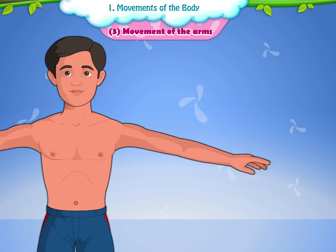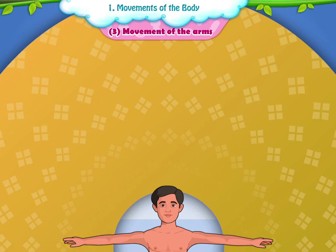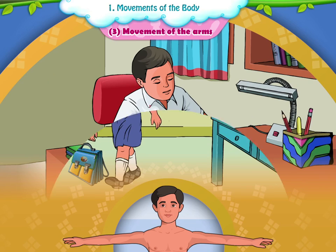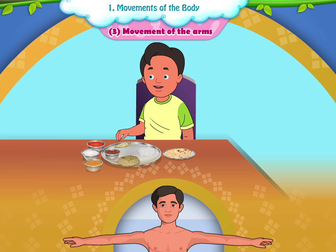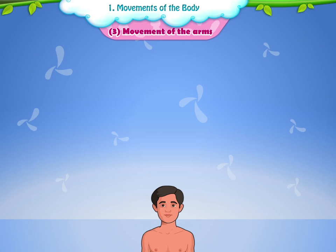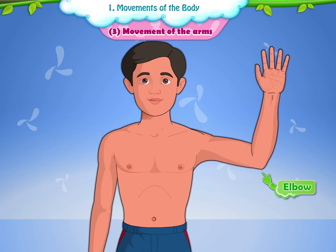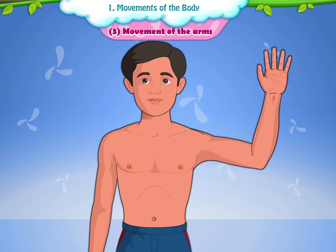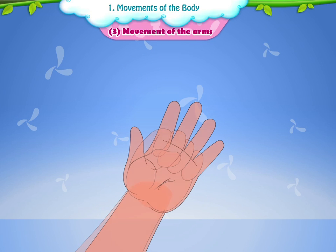Movement of the arms: Hands help us to ride, pick up things from one place to another, and eat our food. We are able to bend our wrist and elbow, move our shoulders up and down, and rotate them in circular motion. Besides, we are able to bend our fingers too.